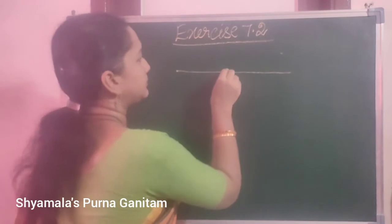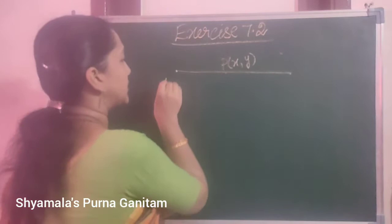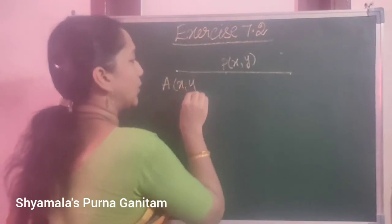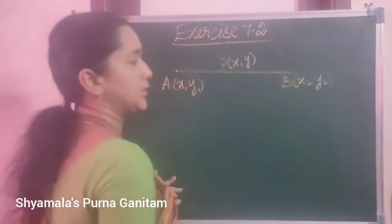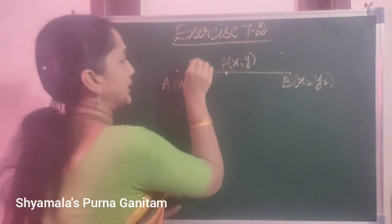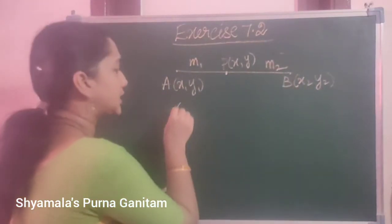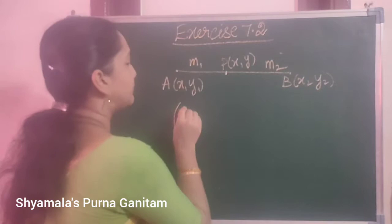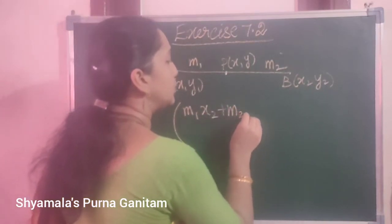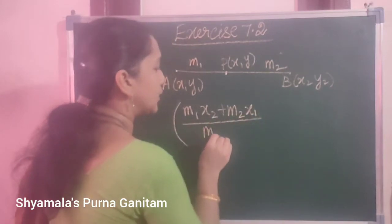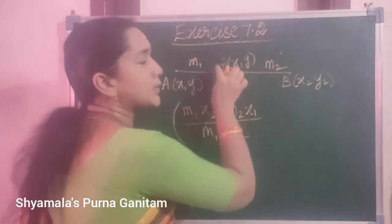So this is the point P, this one is A(X1, Y1) and B(X2, Y2). Section formula means this is the line segment dividing it in the ratio M1:M2. So the section formula is M1·X2 plus M2·X1 divided by M1 plus M2. This is the formula for finding this coordinate point.